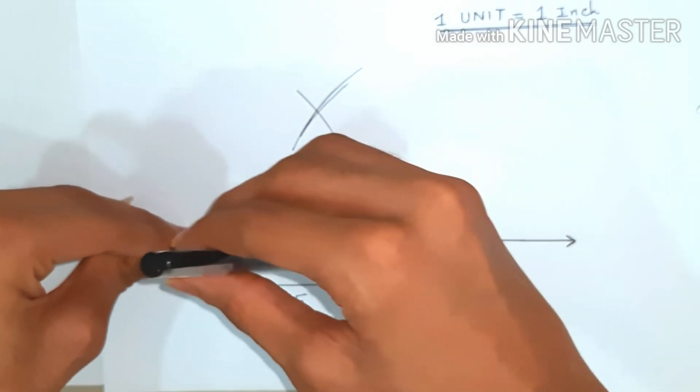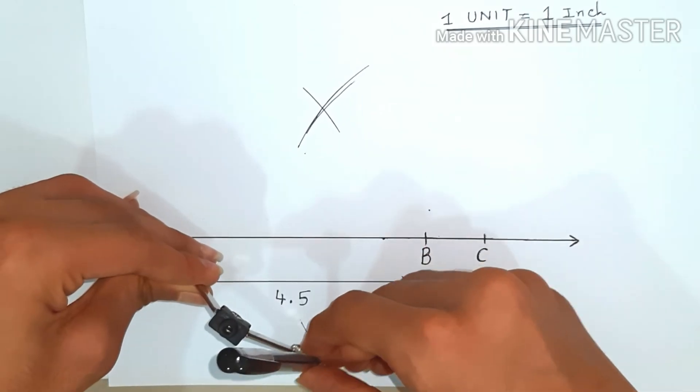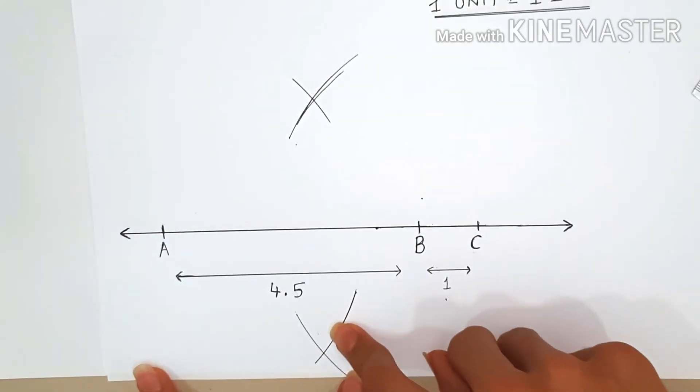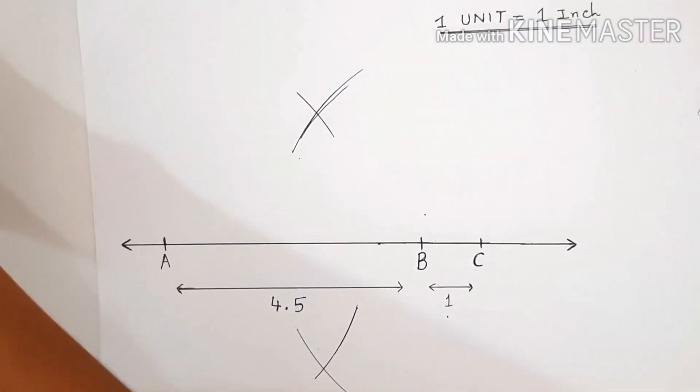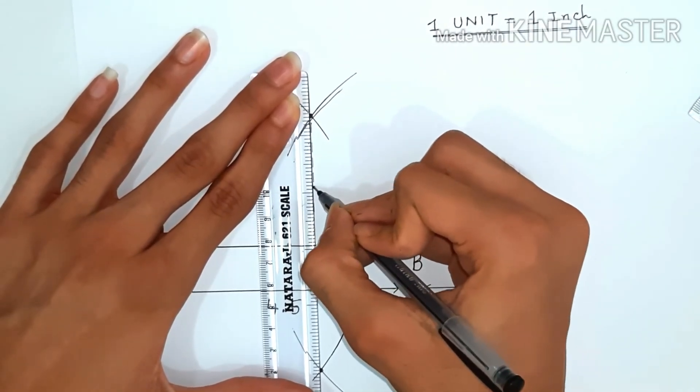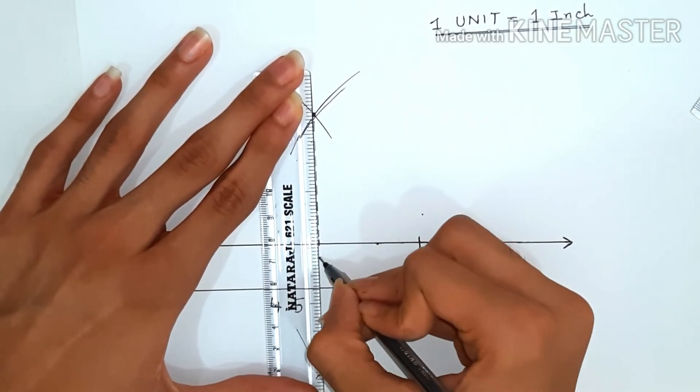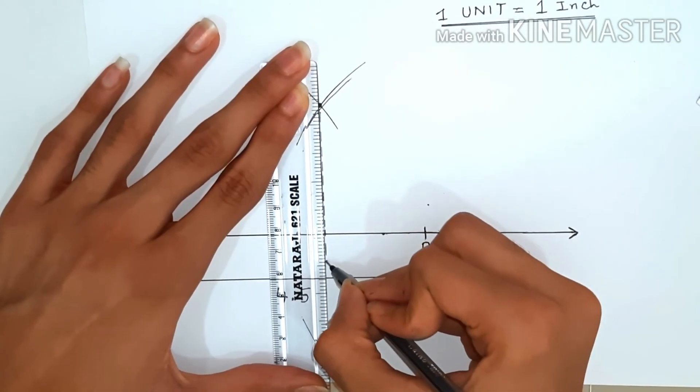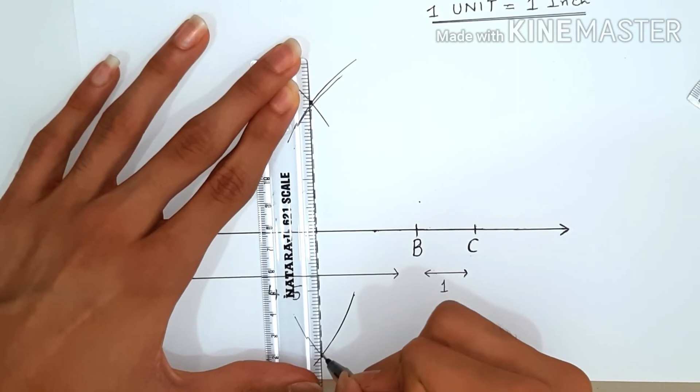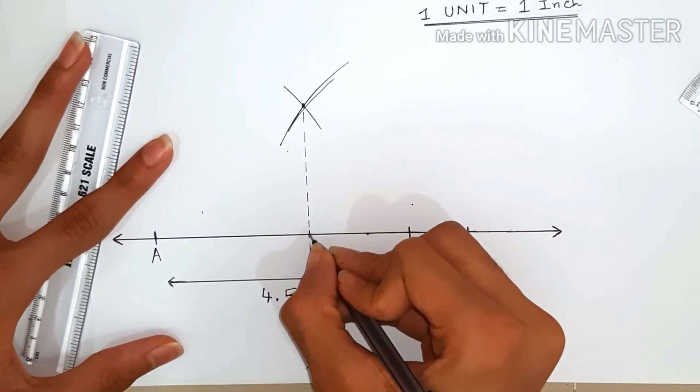Now we got two different points and we'll join them with a dotted line to get a perfect bisector of line AC. The point where the dotted line intersects with line AC would be our point O.